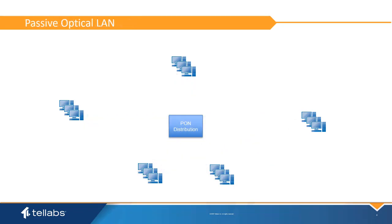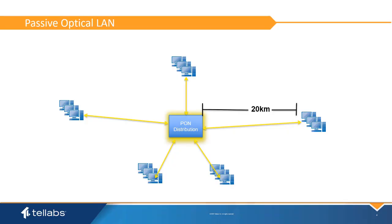In contrast, a passive optical LAN provides connectivity to the LAN using a centralized topology from an optical distribution point. This distribution point serves as a broad access switch with a typical reach of up to 20 kilometers. The passive optical LAN can provide a more resilient network with better security and fewer network switches.